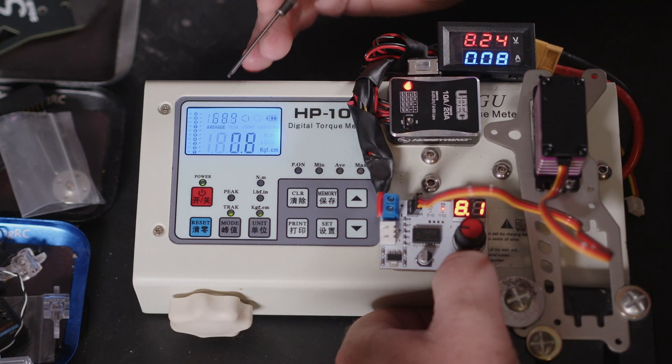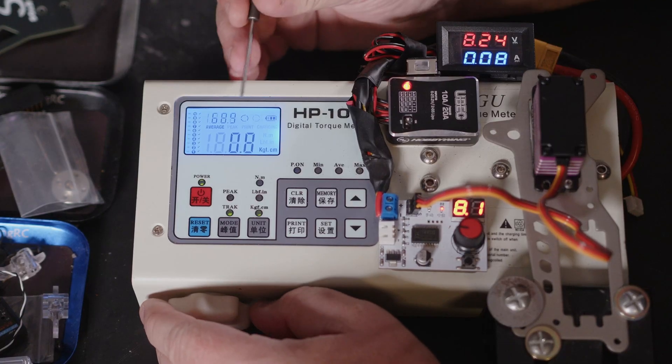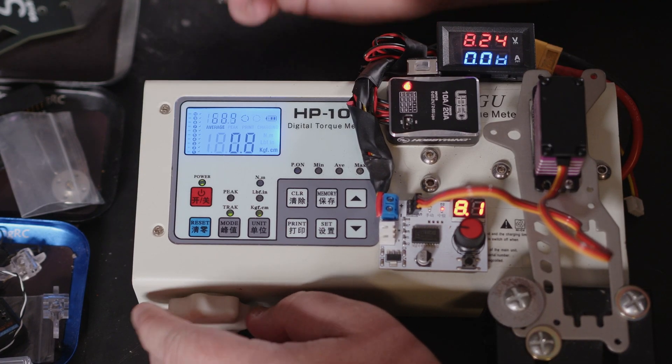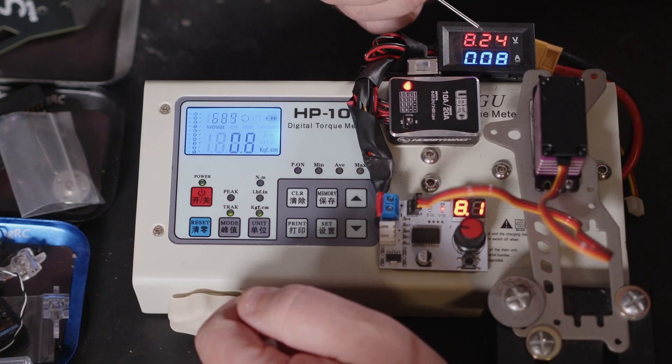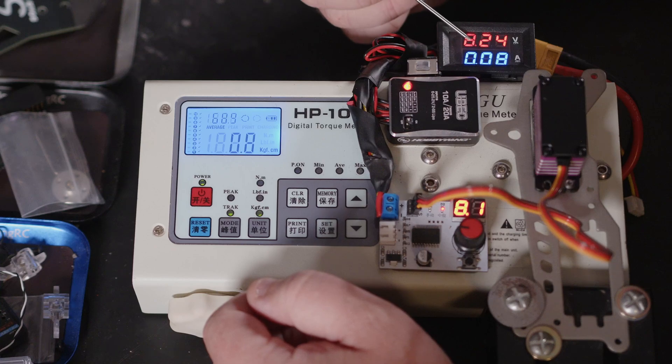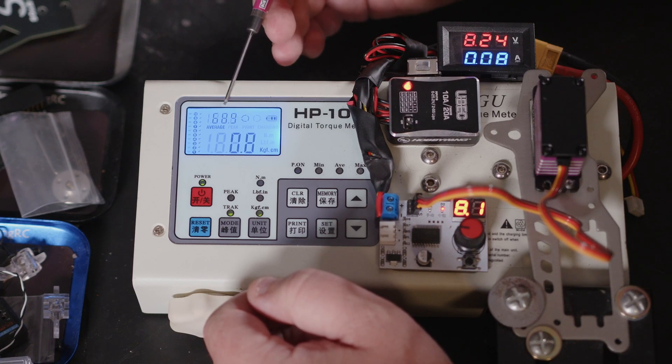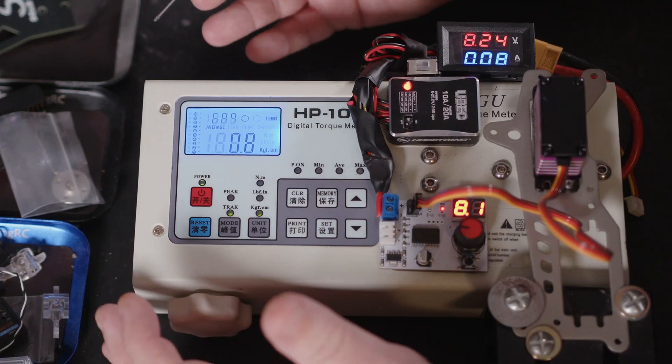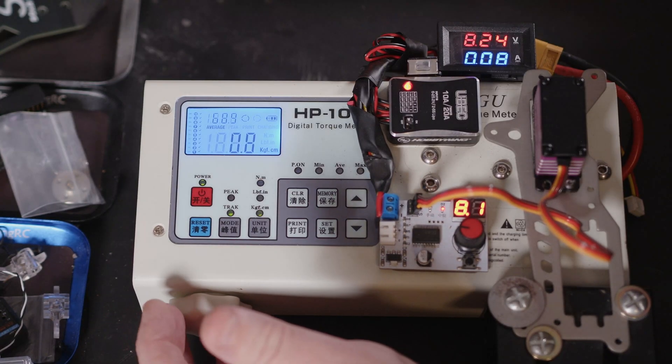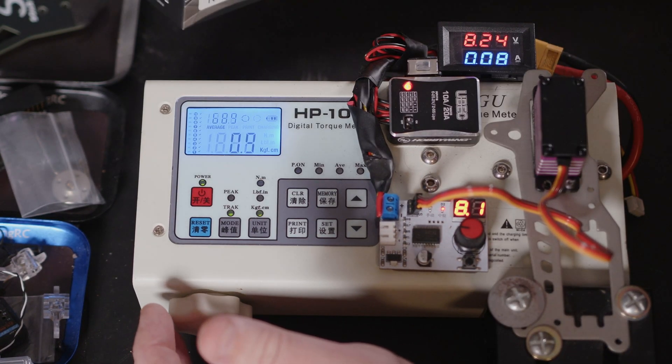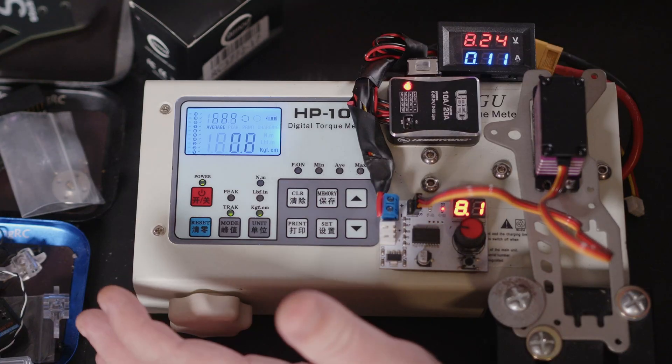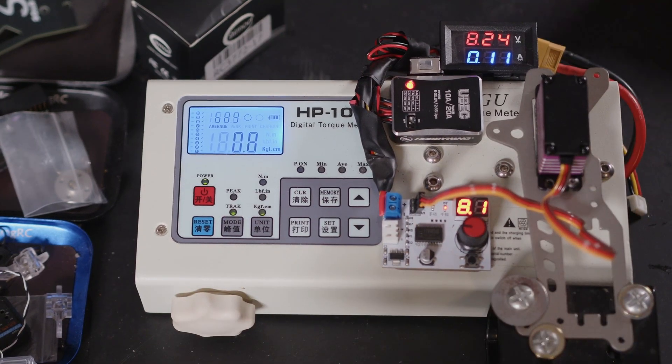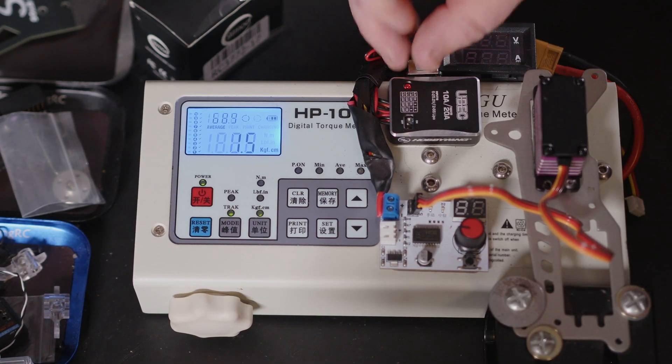We are getting 68.9, so almost 69 kilograms. It's only advertised as a 71 and we're averaging 68.9. There is no doubt in my mind, if we could feed it 8.4 volts, we would definitely get that extra two kilograms of torque.